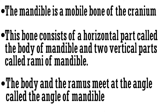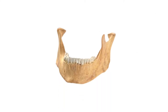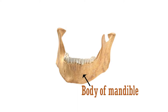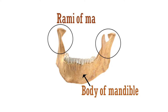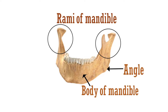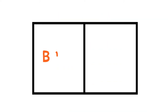Let's have a look. As you can see, this is the body of mandible — the horizontal part — and these two vertical parts are the rami of mandible. This is the angle where the body of mandible and rami meet. We will discuss the parts separately and see what anatomical features they possess.